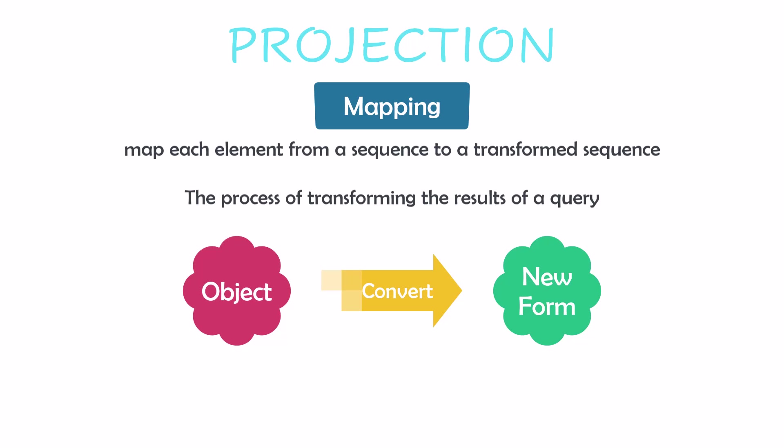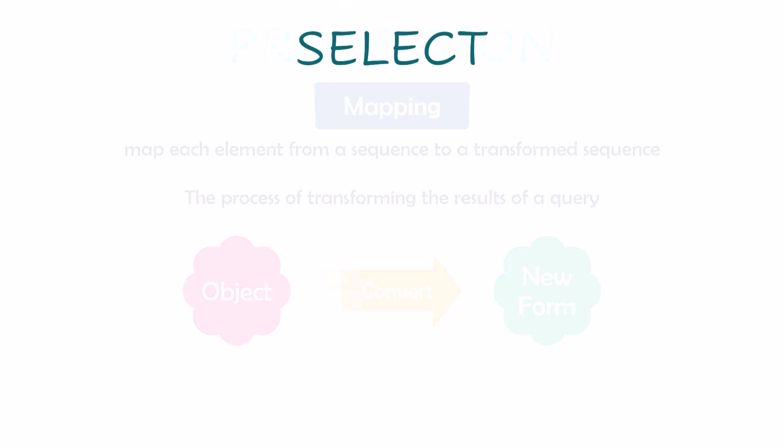You can also project the original object without changing it. In summary, projection is to get specific data from the entire data. Now let's start with the first operator: select.